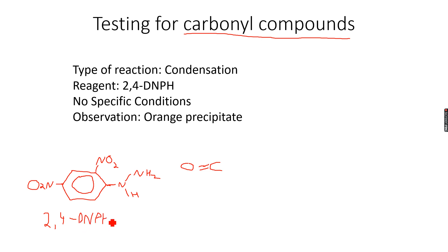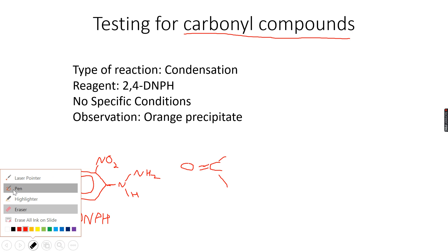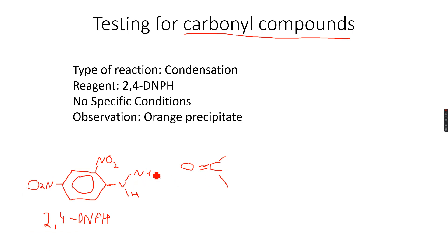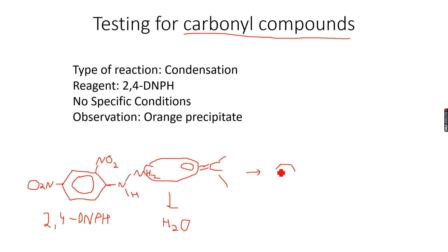This reagent is 2,4-DNPH or 2,4-dinitrophenylhydrazine. You can write DNPH in your paper - you will not be penalized, it's completely fine. What happens is: let's say this is the carbonyl group - there can be H, there can be R, it can be a ketone or an aldehyde. The H2 combines with the oxygen, so a water molecule is eliminated - and the other two compounds combine.